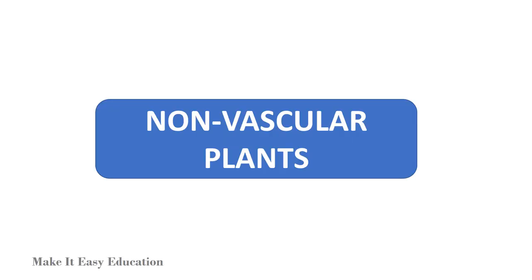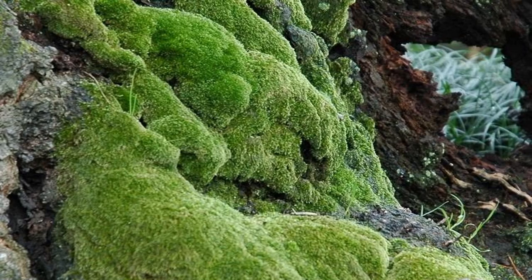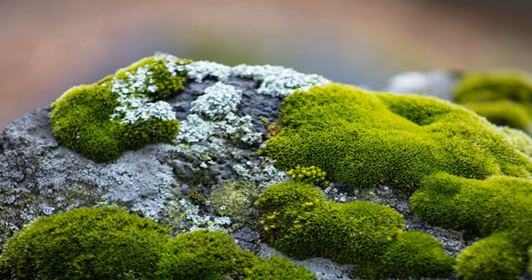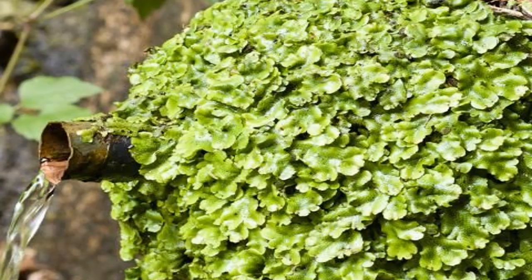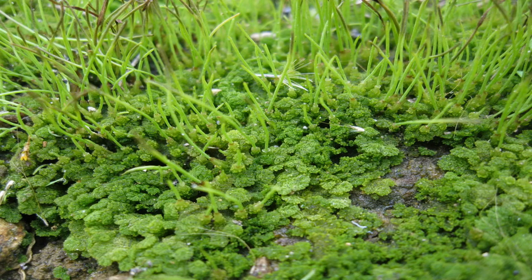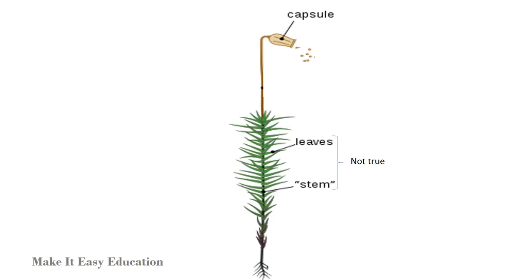Non-vascular plants are plants which do not have a specialized vascular tissue. They are small in size due to the poor transport of water and nutrients. Thus, they do not have true stem or true leaves. Root-like structures of non-vascular plants are called rhizoids. Non-vascular plants reproduce through spores.